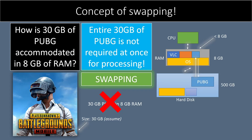Swapping is the process the operating system uses to move data between RAM and hard disk. The OS moves the portion of the program that is not immediately needed out of the RAM and stores it on the hard disk. It copies the data back into RAM when the program is needed again.